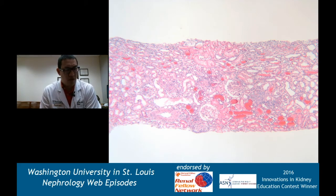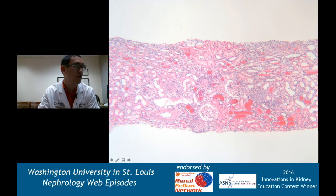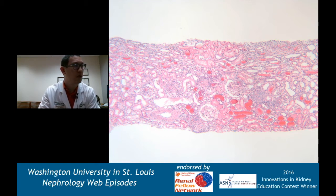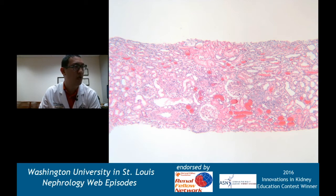This is an H&E stain - again, a nice sample. We can see at least six glomeruli. The glomeruli don't look totally normal. What you can also see here are red blood cell casts within the tubular lumen. There's pretty preserved interstitium and tubules - not a lot of atrophy, not a lot of fibrosis. Again, that's a good sign.